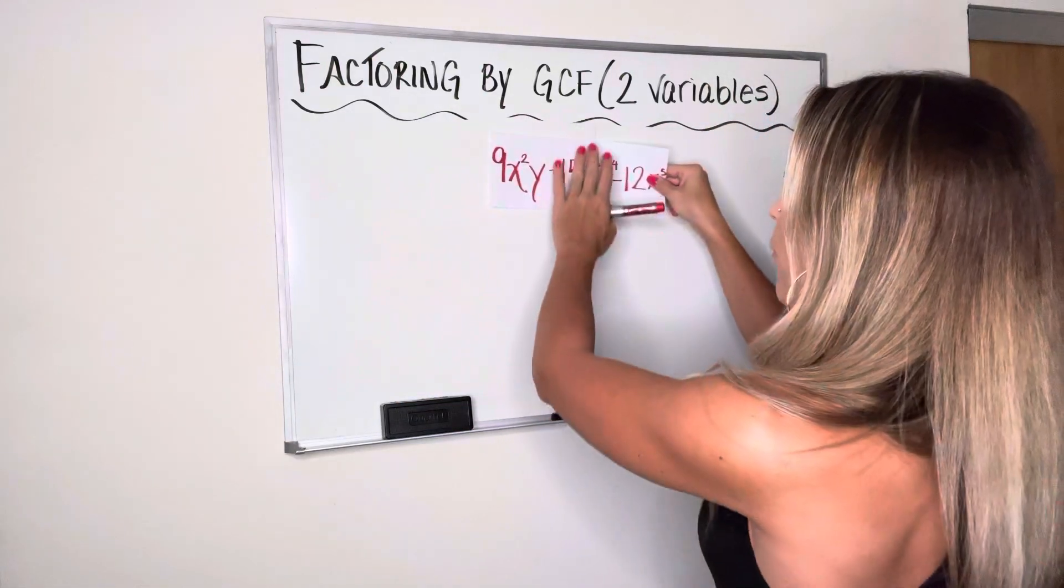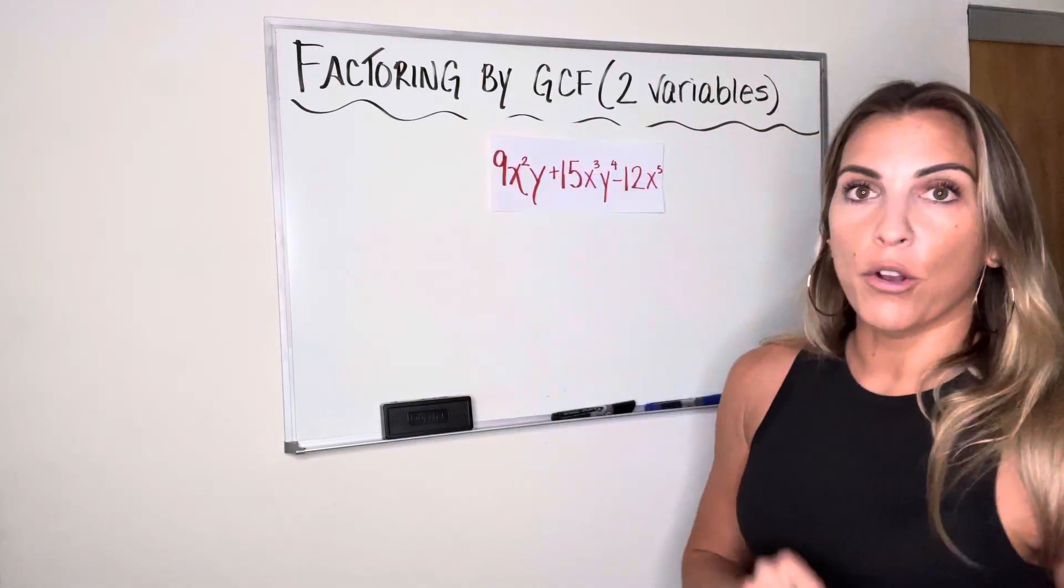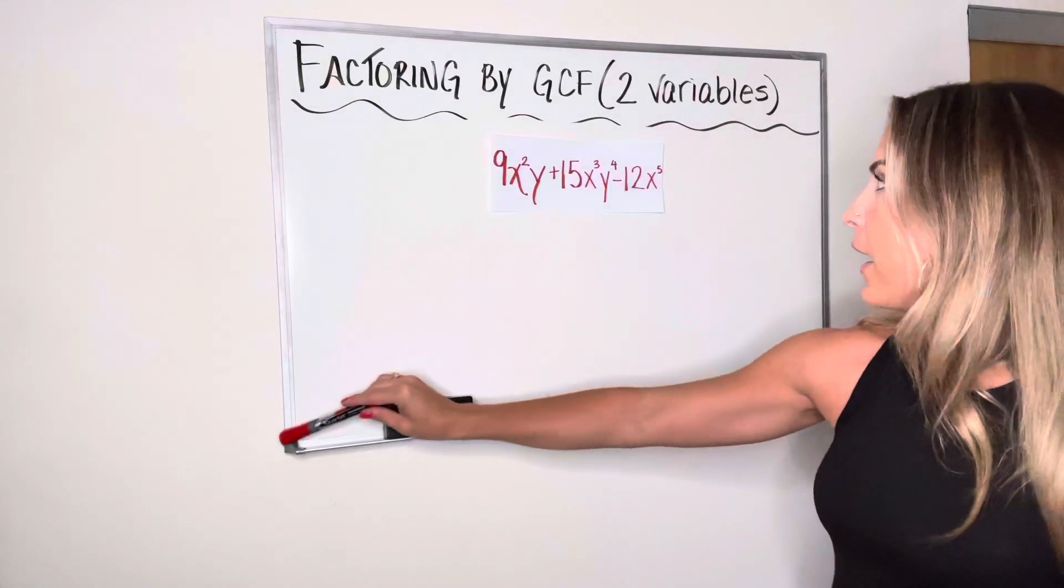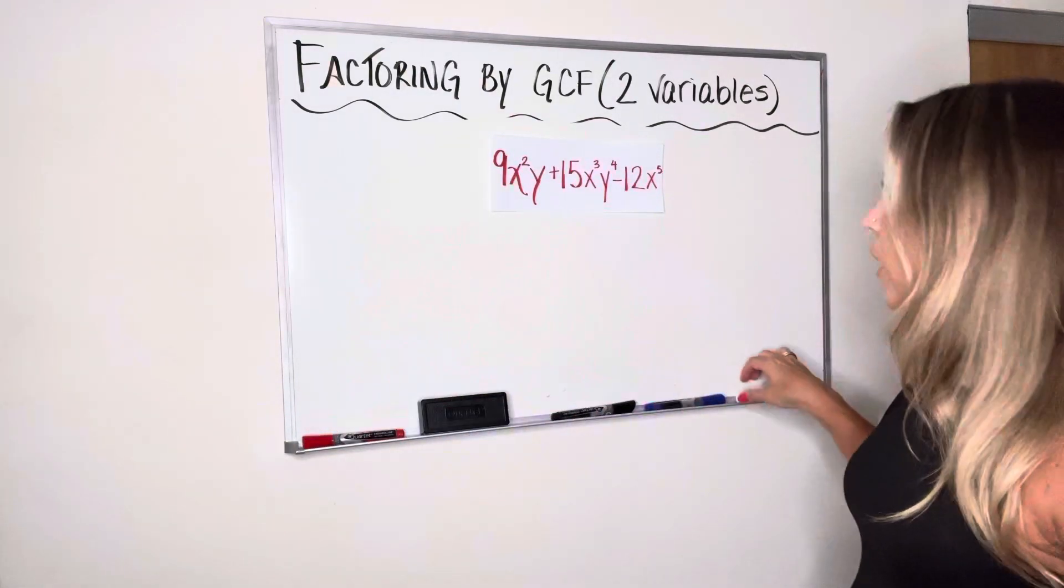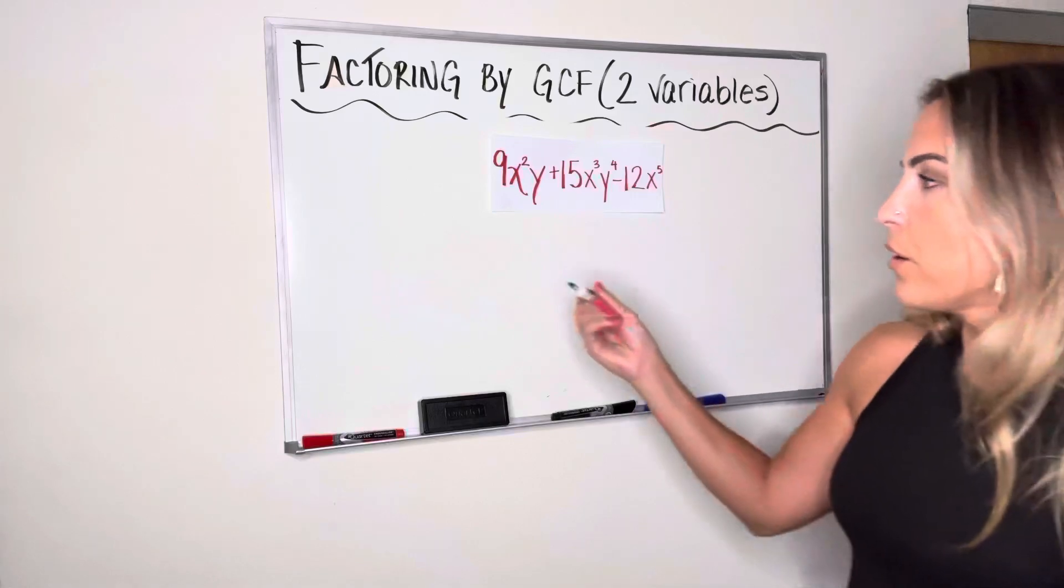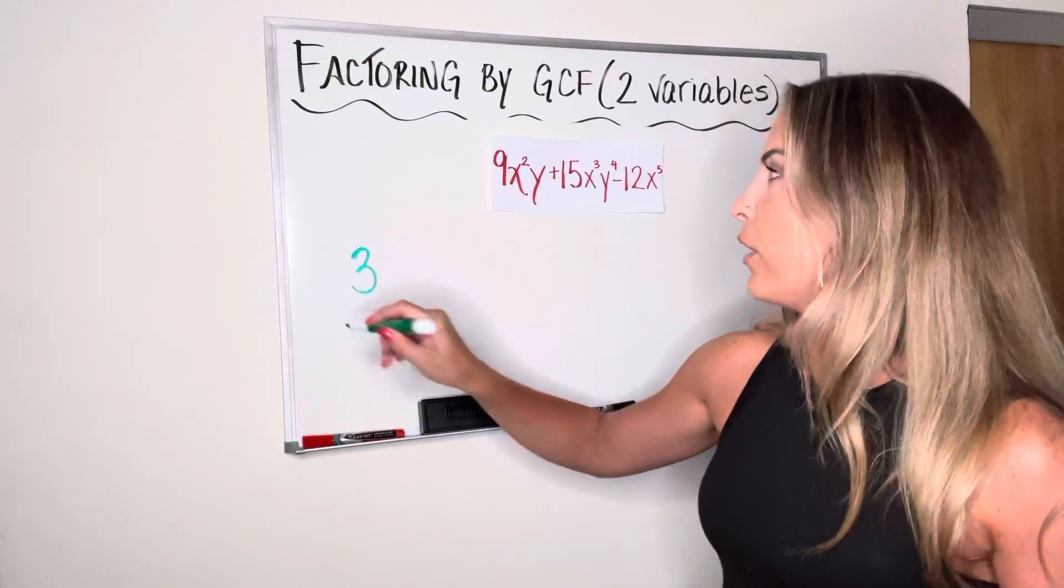So again, we're starting off with the coefficients. Let's find the numerical portion of my GCF. I've got a 9, a 15, and a 12. The greatest number that can go into all of those is a 3.